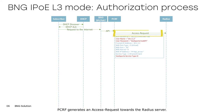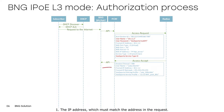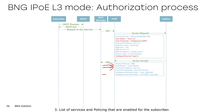PCRF generates an access request towards the RADIUS server. Upon successful subscriber authorization, an access accept is sent with the required fields: the IP address, which must match the address in the request; the user name, which defines the subscriber's username; and the list of services and policing that are enabled for the subscriber.